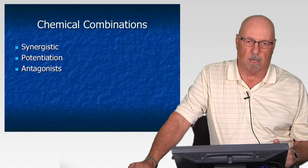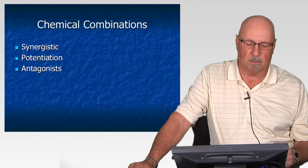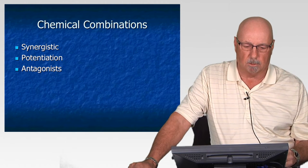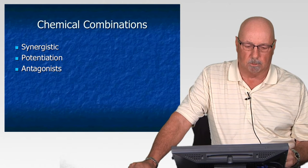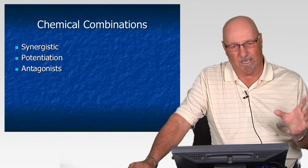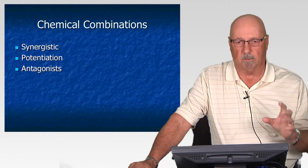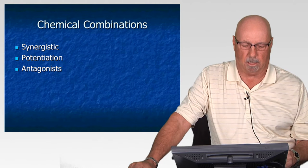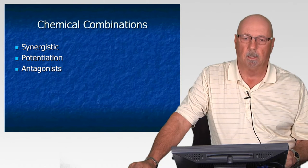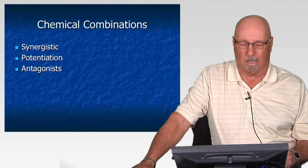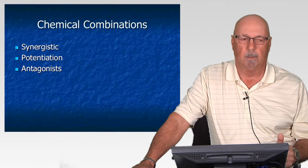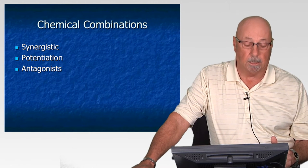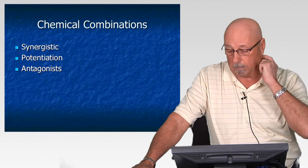The best documented example of synergism is asbestos and cigarette smoking. Studies have clearly shown that doing each independently has a certain potential for damage, but when you do both together the studies have shown it can be anywhere from 80 to 200 times more dangerous.